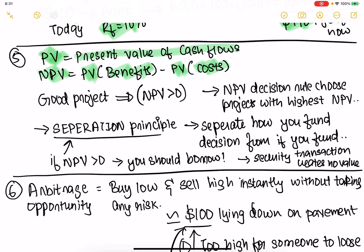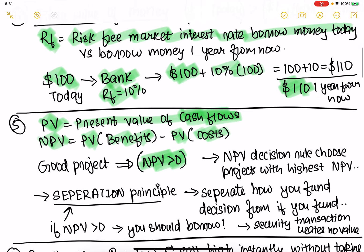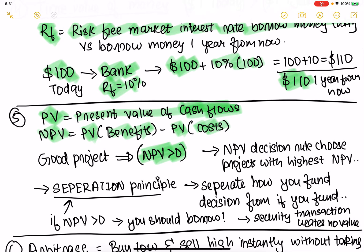An asset is nothing but a claim on cash flows. If you have cash flows, you can easily calculate present value. A good project is any project that has NPV greater than zero. So if you calculate benefits minus costs and express everything in present value — same currency — you can apply the NPV decision rule: pick the project with the highest NPV.